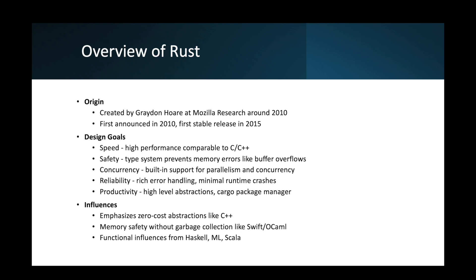The design goals: first is speed — high performance comparable to almost C and C++. Rust is intended to be a systems language usable for tasks traditionally done in C and C++. It achieves high runtime performance through zero-cost abstractions and compiles to native code with low-level control and manual memory management.